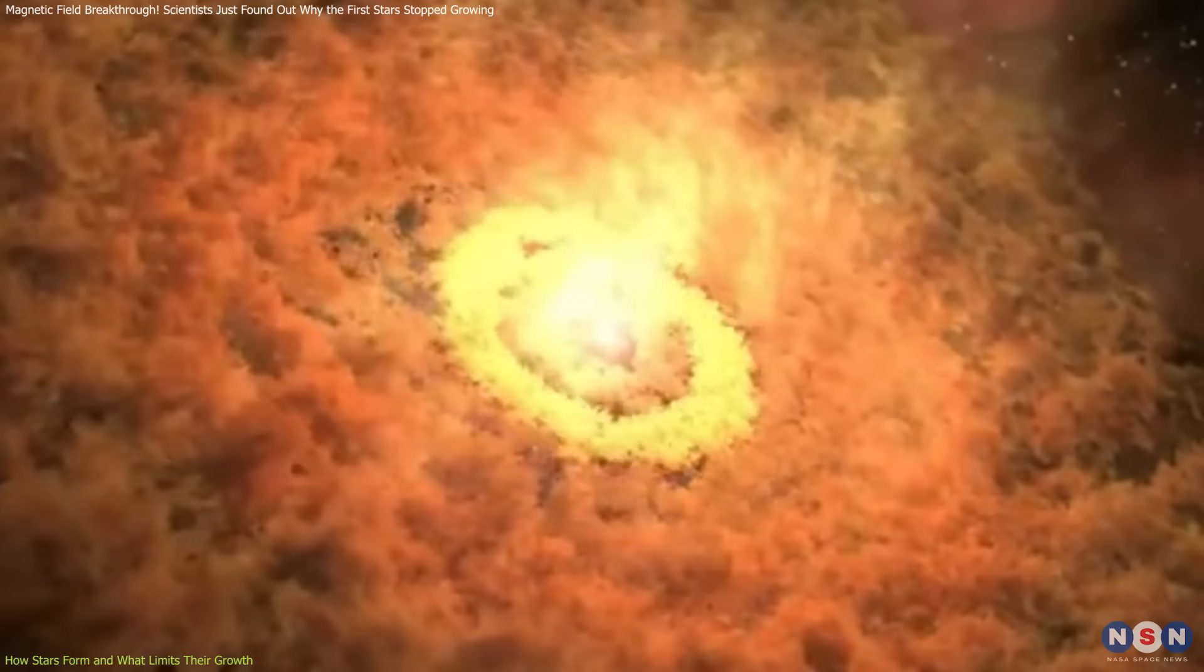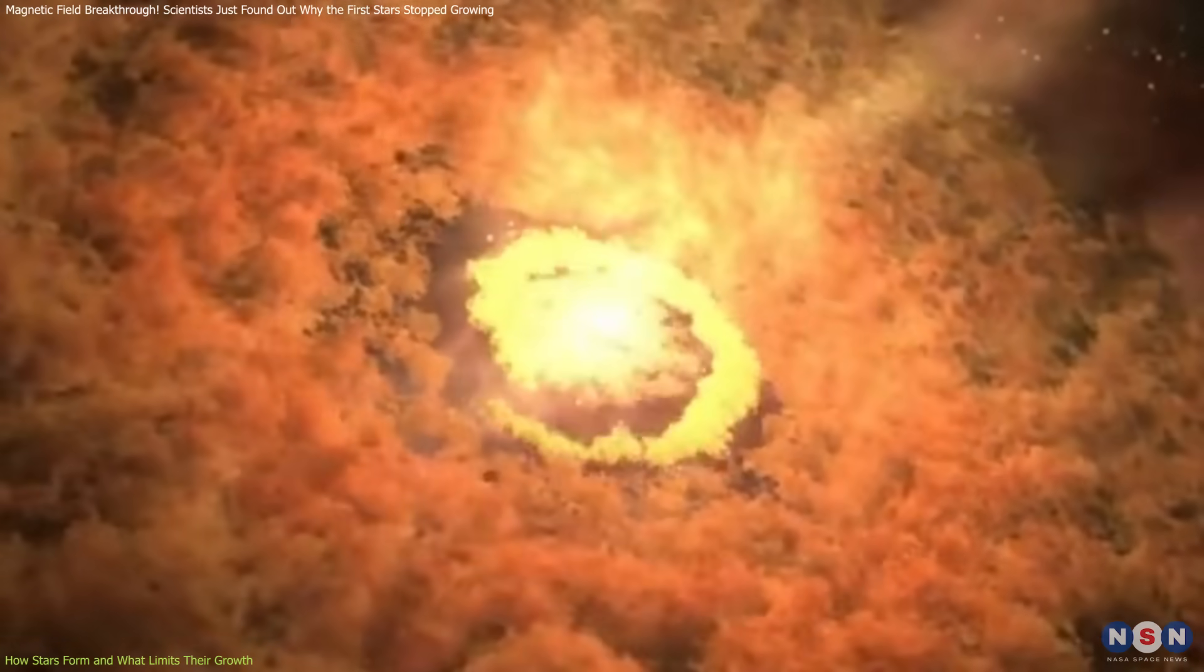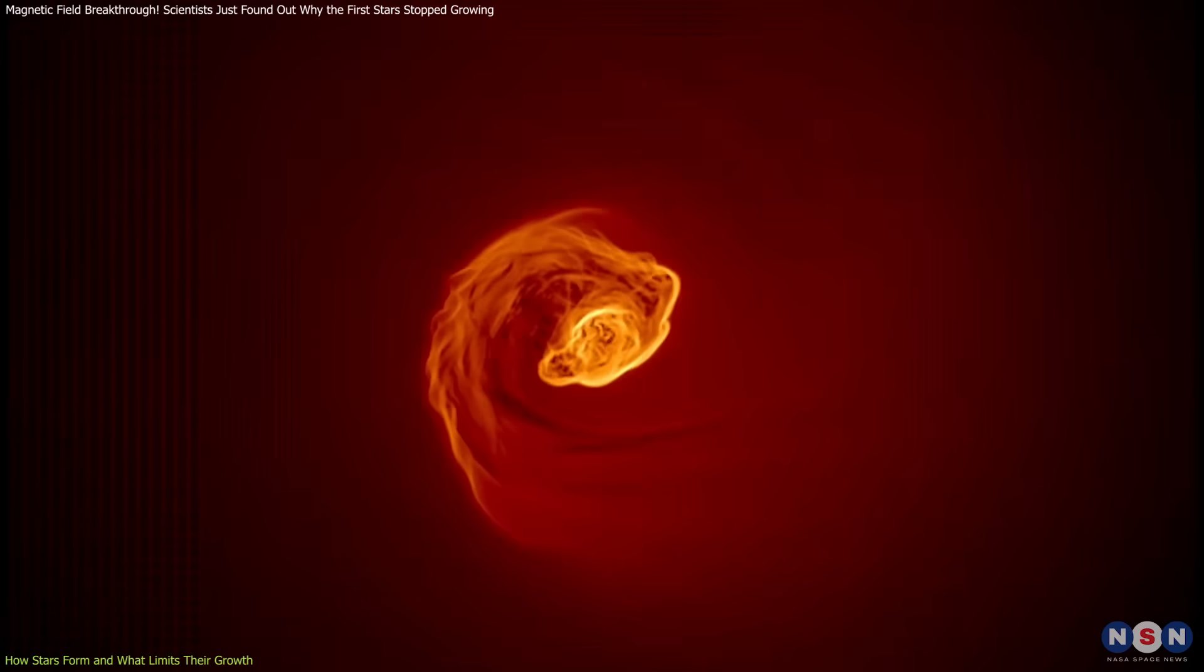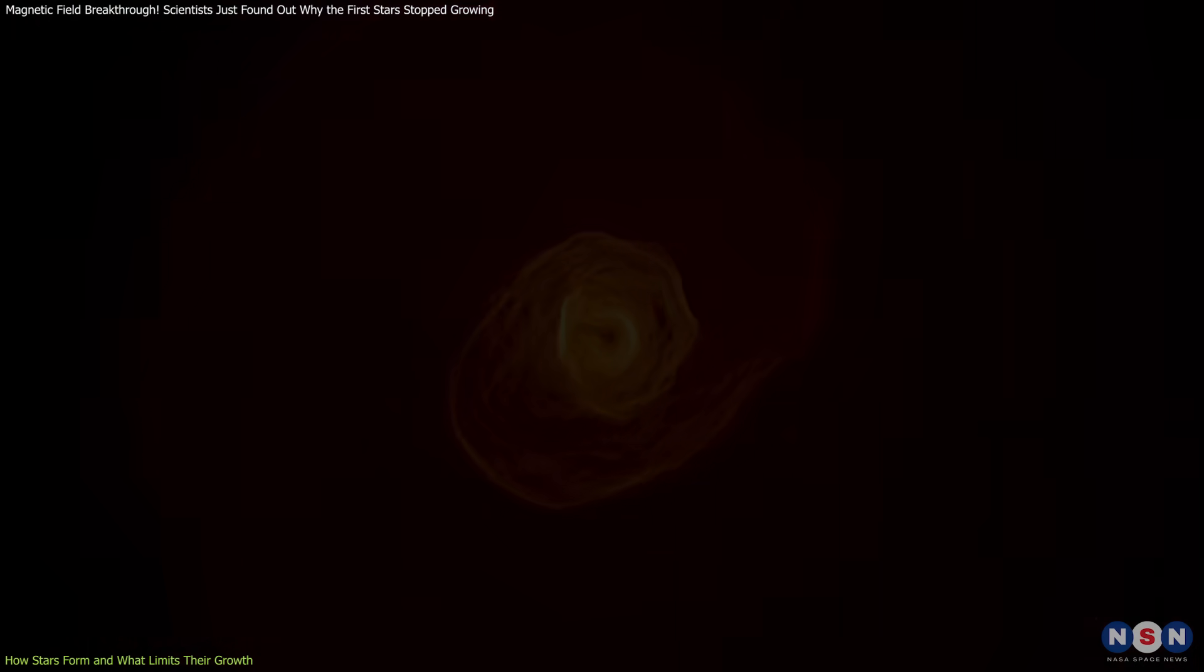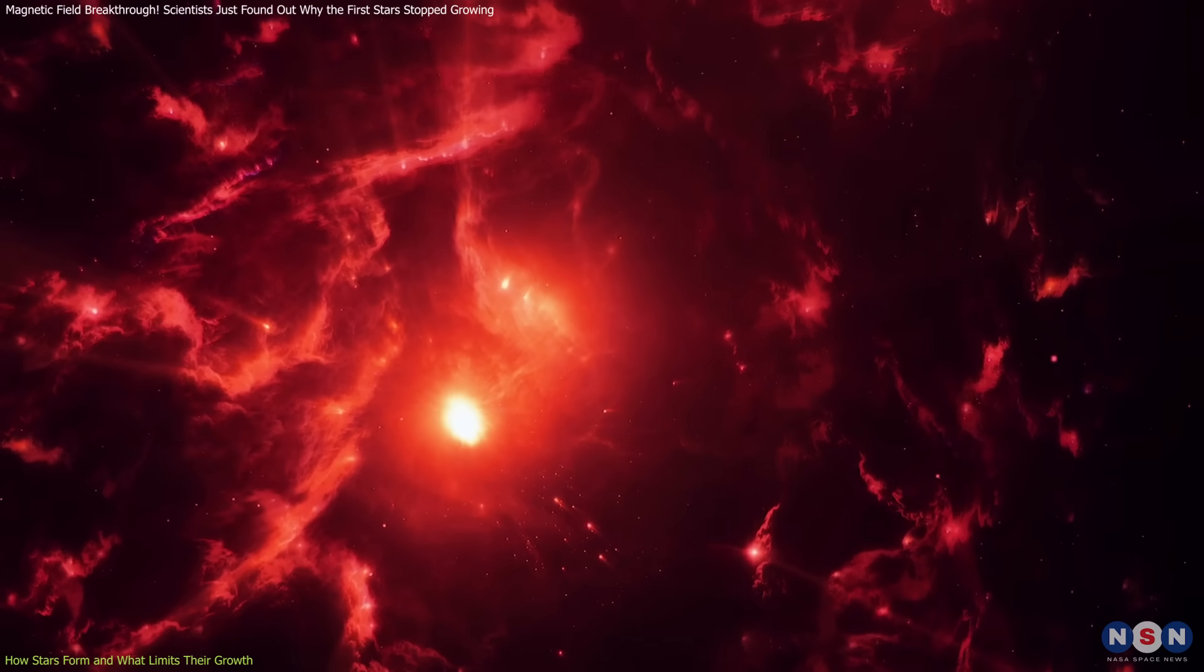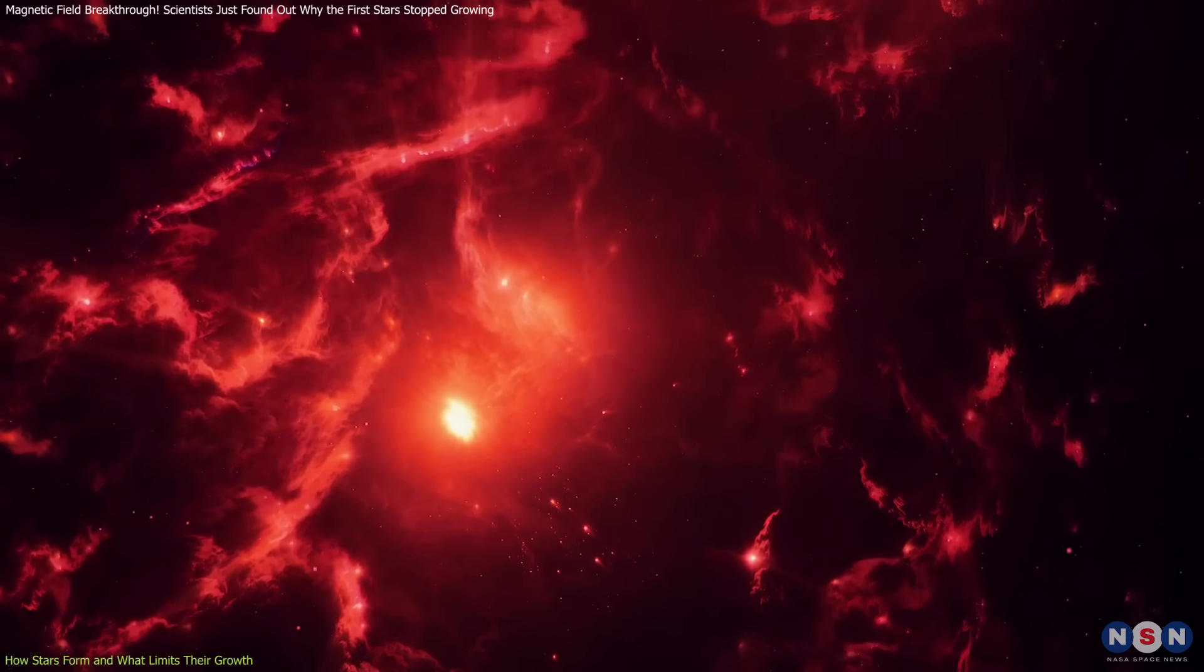This dense core eventually becomes a protostar. Think of a protostar as a baby star that's still growing by pulling in more gas from its surroundings. This process, called accretion, is what allows a star to gain mass.